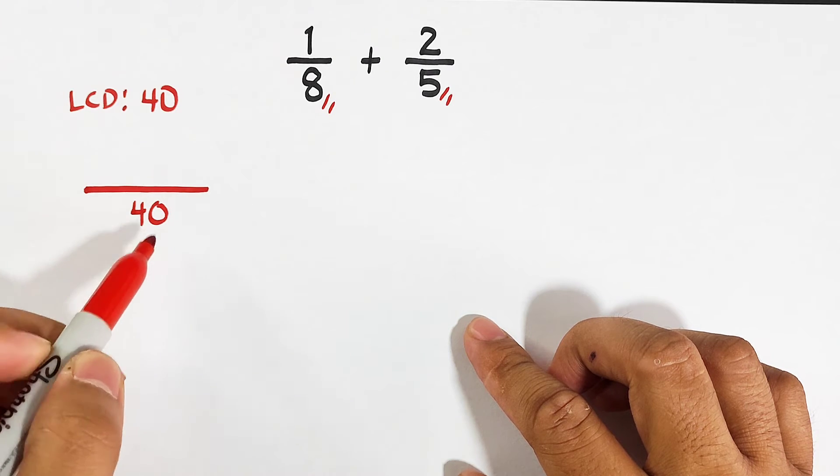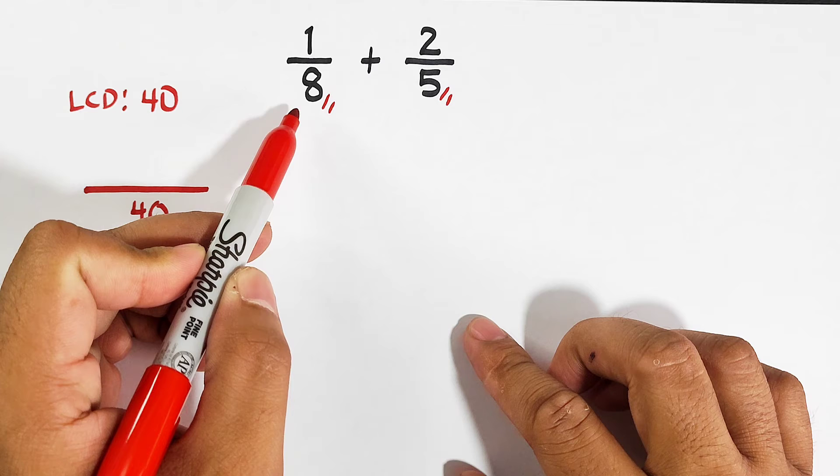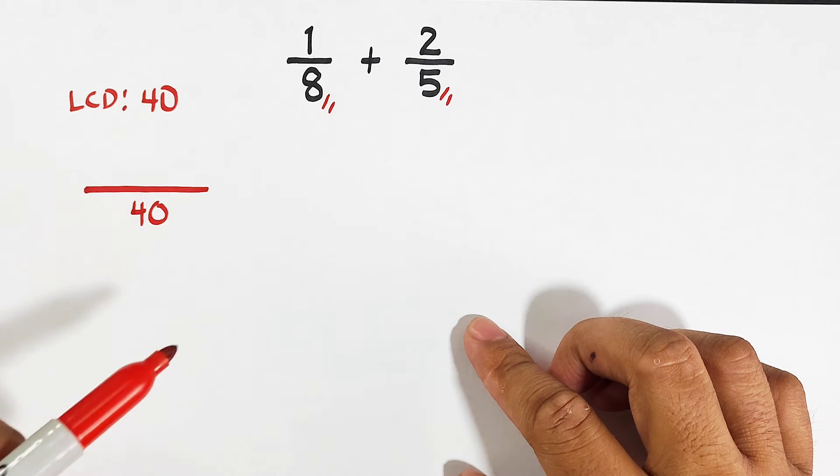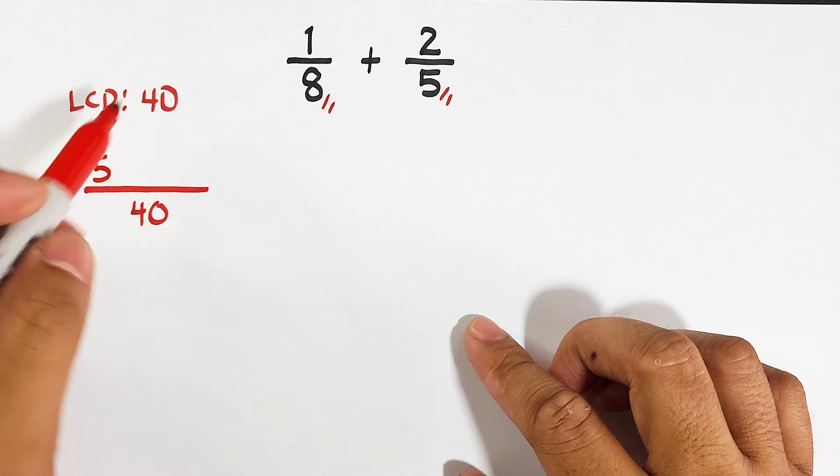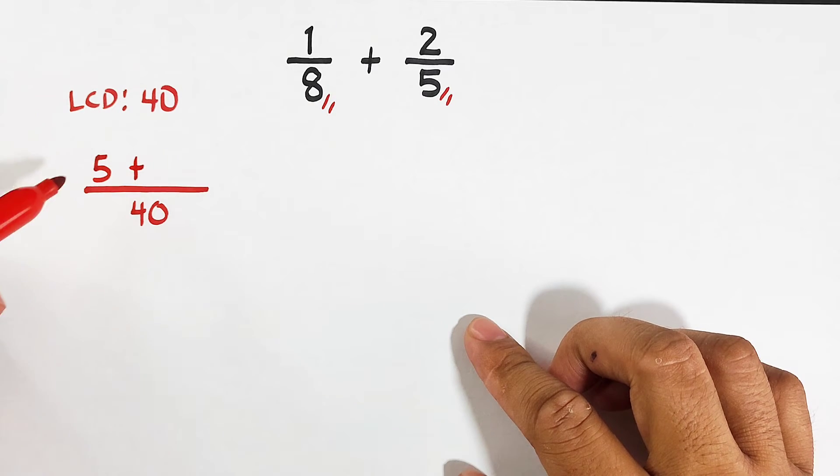We have 40 divided by 8. That is 5 times 1. That is equal to 5. Copy your addition operation.